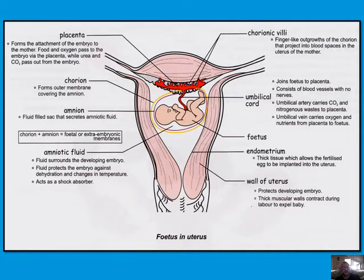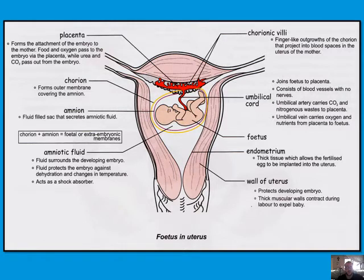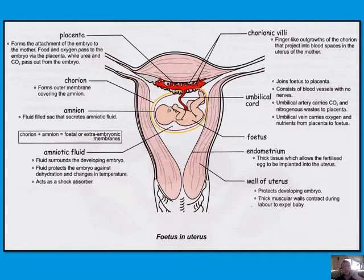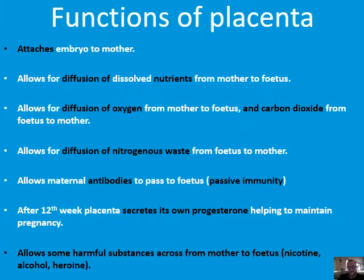What the umbilical artery and vein do is the opposite of what the body's arteries and veins do. In our bodies, arteries carry oxygen and nutrients and veins carry waste products and carbon dioxide. But the umbilical artery carries CO2 and waste products, whereas the umbilical vein carries oxygen and nutrients. Remember: an artery is away from the heart and a vein is towards the heart — in this instance, towards and away from the fetus. This comes up in several tests.